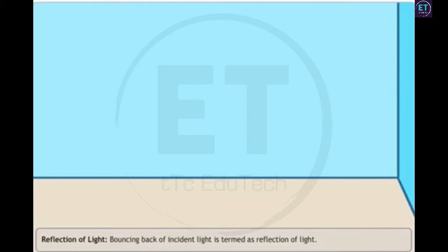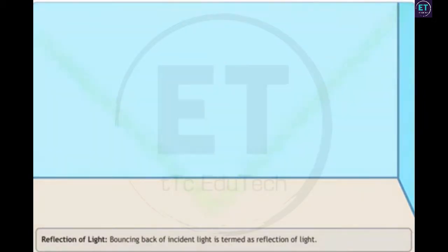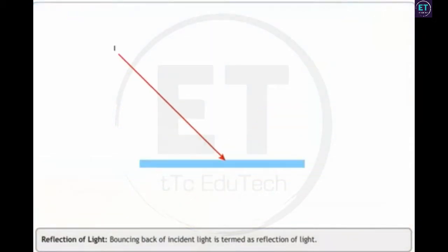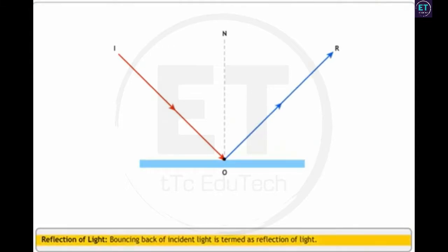When a ball is thrown at any surface, it bounces back. Similarly, when light rays are incident on a surface, they bounce back. The bouncing back of light rays is known as the reflection of light.